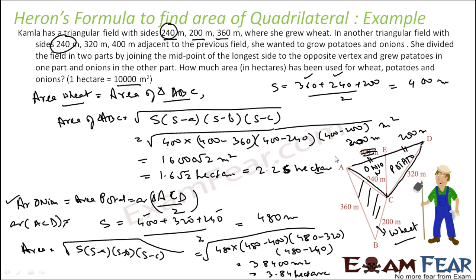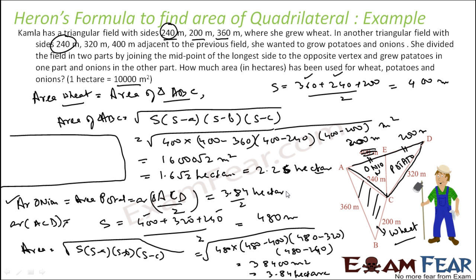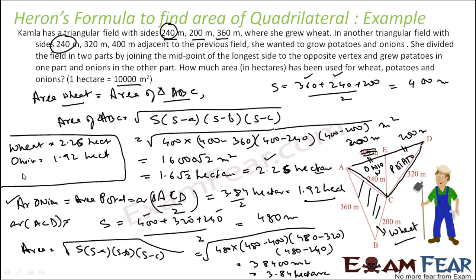Since the area of ACD is 3.84 hectare, the area of onion cultivation is ACD divided by 2, which is 3.84 / 2 = 1.92 hectare. Similarly, potato area is also 1.92 hectare. So in summary: wheat is 2.26 hectare, onion is 1.92 hectare, and potato is 1.92 hectare.